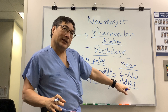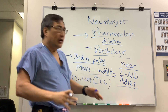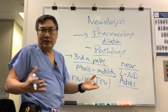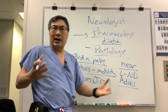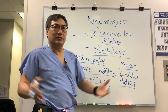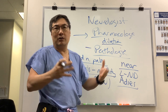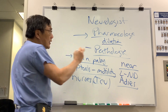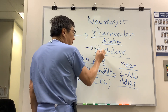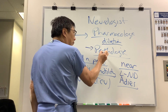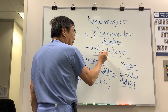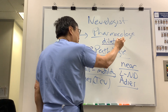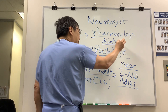With Adie's tonic pupil, the dilated pupil doesn't respond to light, but when you test the near response it constricts with vermiform movement and sector palsy, with no ptosis and normal motility. You also need ophthalmology to look at the iris and make sure there's no damage from cataract surgery, trauma, uveitis, or synechiae.